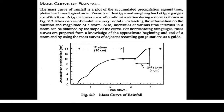Now let's talk about the mass curve. The mass curve shows the accumulated depth of rainfall with time. With the hydrograph we saw the representation of rainfall intensity with time; however, the mass curve shows how much depth has accumulated from the start of a particular rainfall event until it ends.